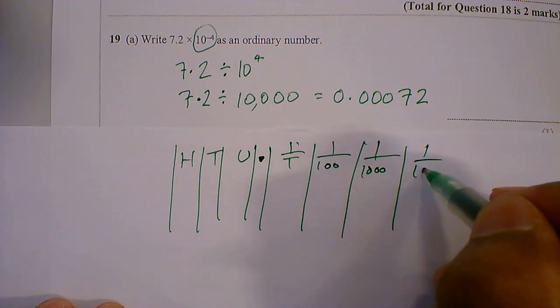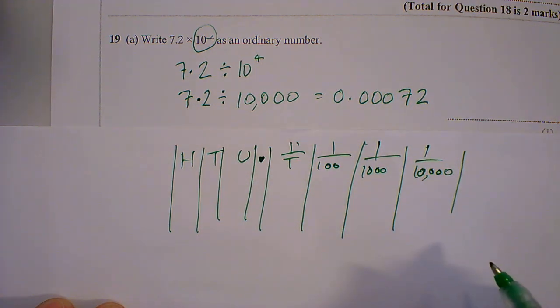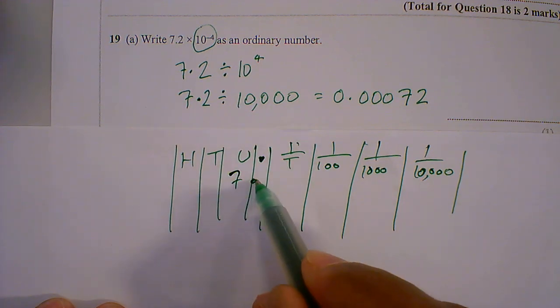We've got ten thousandths. Okay, and so 7.2 is here.